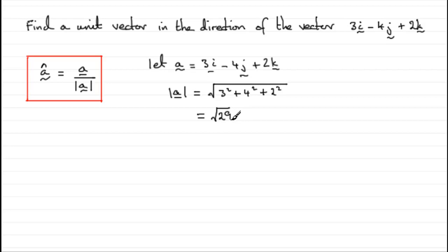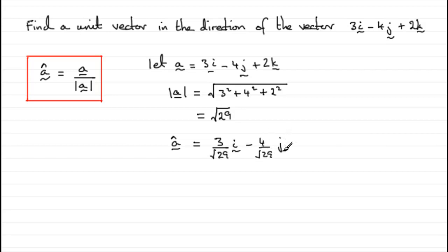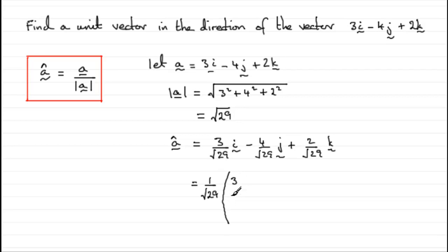It doesn't square root nicely, so I'll just leave it as the square root of 29. To get the unit vector a-hat, all we need to do is find 1 over root 29 of this vector, which is 3 over root 29 in the i direction, minus 4 over root 29 in the j direction, and plus 2 over root 29 in the k direction. You could also write this as a column vector, pulling out the 1 over root 29, leaving just 3, minus 4, and 2 inside. That's an alternative way that you might see or use.